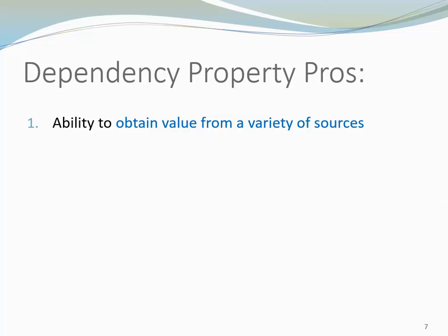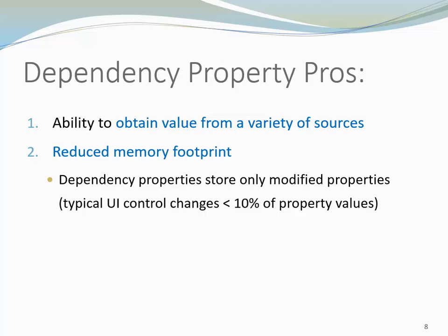There are advantages of using dependency properties. One of them is that we have this wide variety of sources where we can obtain the value from. Another one is a reduced memory footprint. Dependency properties store only modified properties. This is significant because many UI controls have dozens of properties and typically less than 10% of the property values are set.